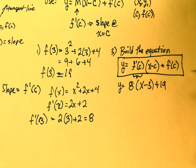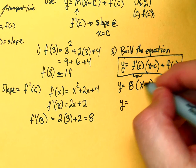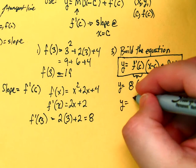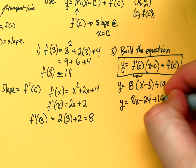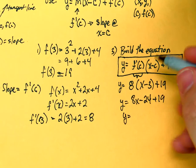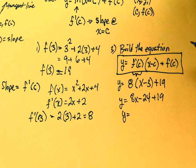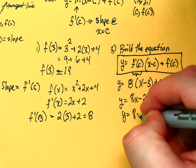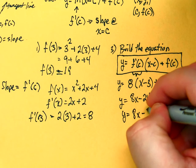Alright, so, y is equal to distribute 8x minus 24 plus 19. So, y is equal to what? 8x minus 5. There's your tangent line.